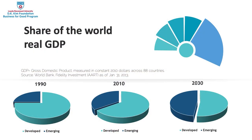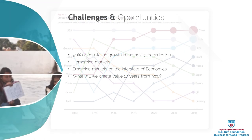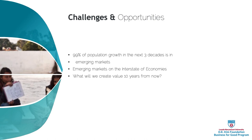Much of the share of world GDP is moving to emerging markets. The center of economic equilibrium is moving away from advanced economies. A number of graphs show how emerging economies are poised to keep growing in terms of GDP, and a large proportion of people being added to the world will be in emerging markets.